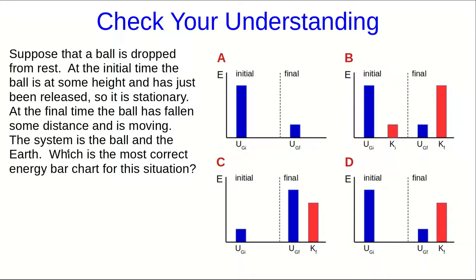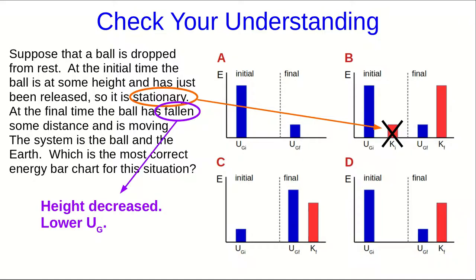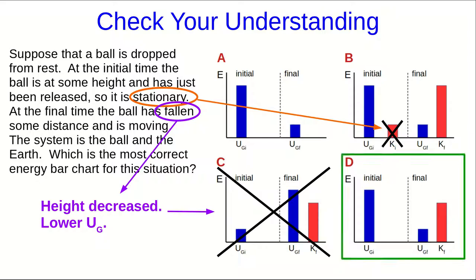Well, how did you do with this question that I asked at the end of the last part of the video? We know that the ball started from rest, and a stationary object, by definition, has no kinetic energy. So the initial kinetic energy has to be zero. Also, we know that the ball has gone down, and things have more gravitational potential energy when they're higher up. And so the gravitational potential energy must have decreased. In C, we're showing it having increased, which it can't have done. So the answer is D.